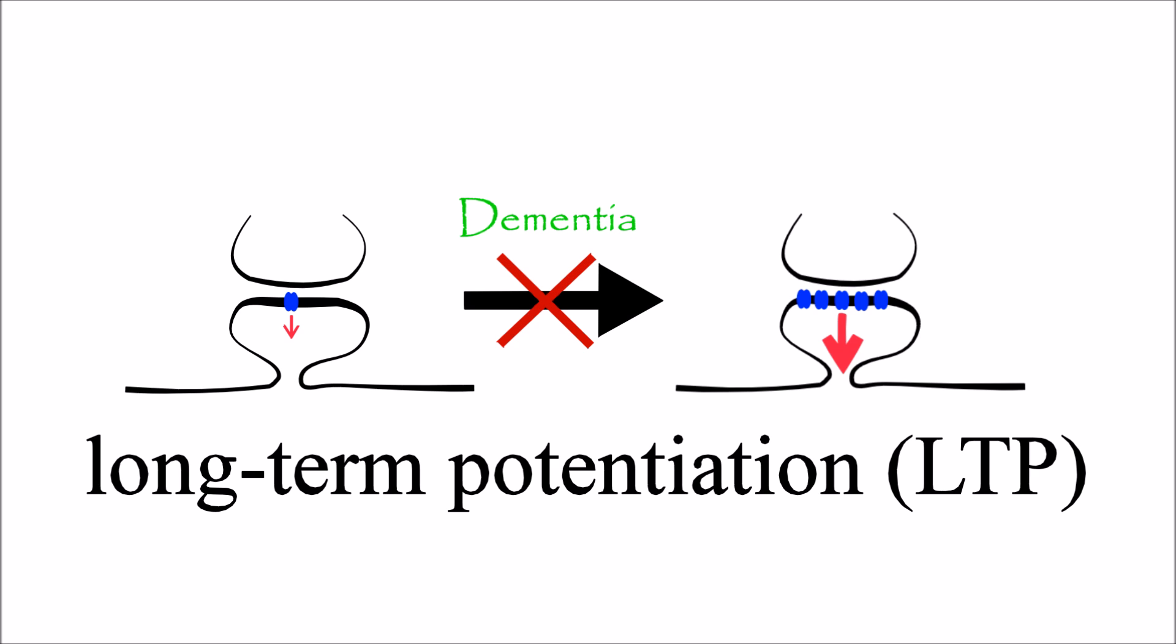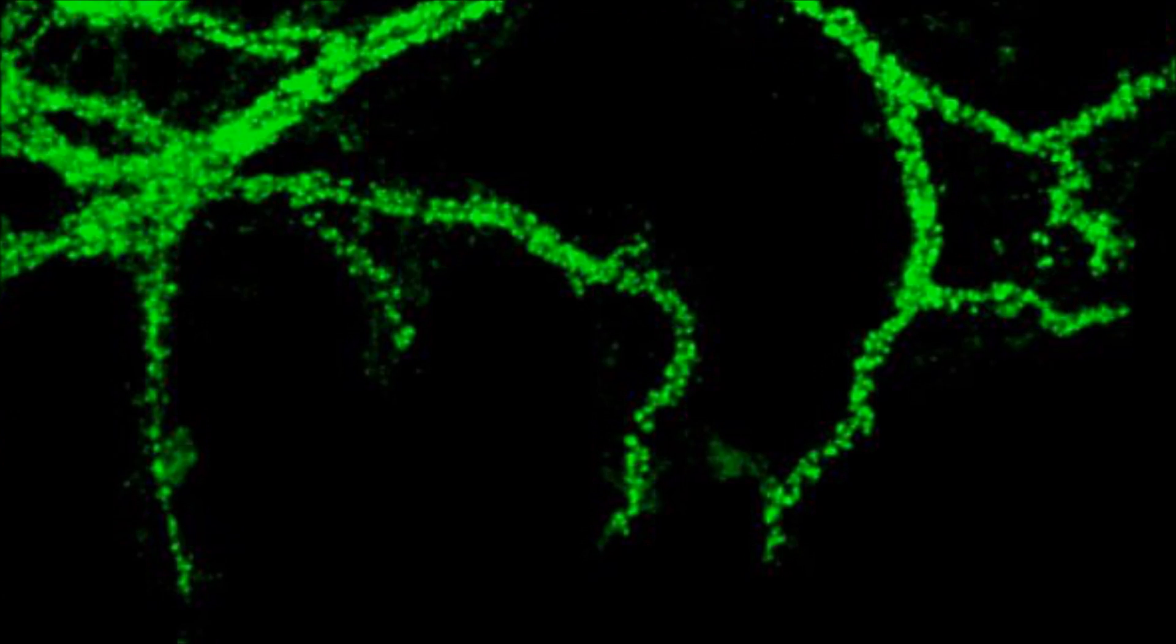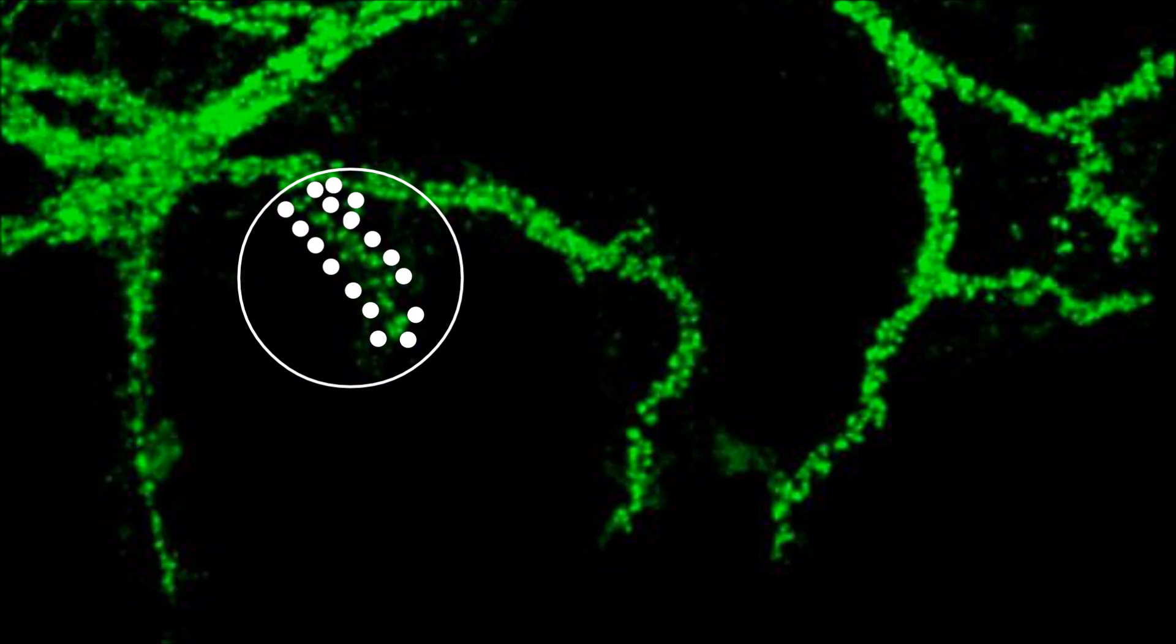A real neuron, here an example is shown expressing a fluorescent synaptic marker, has thousands of synapses which can be made stronger or weaker. These individual synapses appear as green balls as we zoom in.